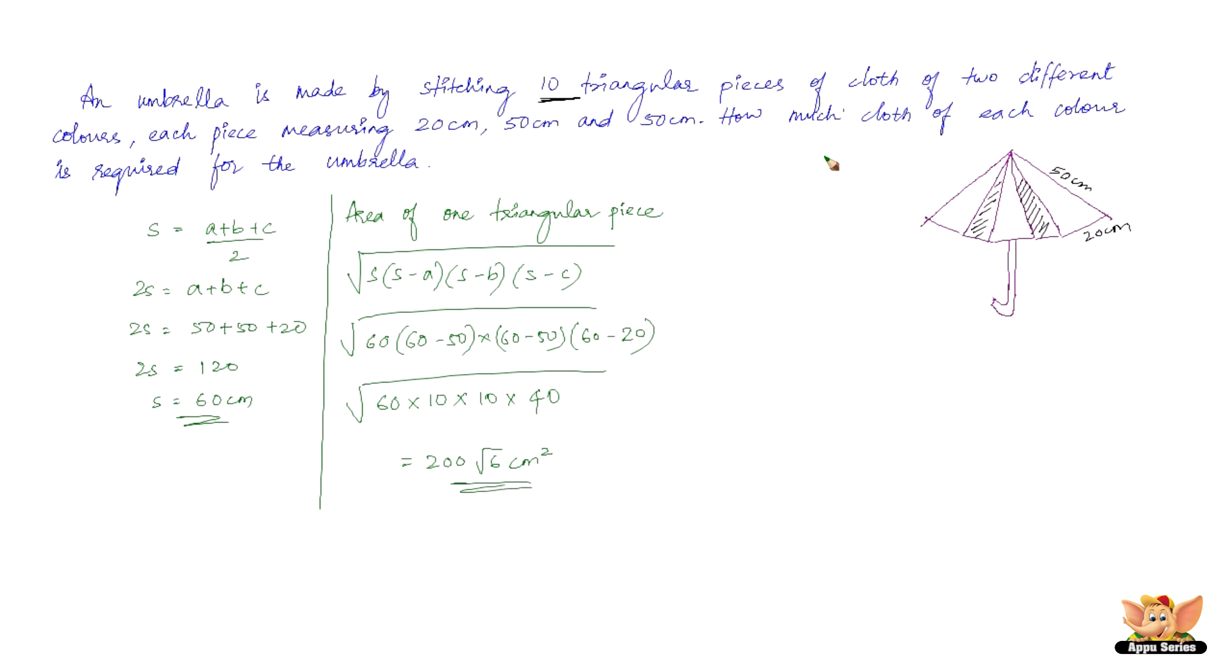So now the question here is how much cloth of each color is required for the umbrella? It is made by stitching 10 triangular pieces of cloth of two different colors. So each color is going to be of five pieces or five pieces of the same color. So 10 pieces of two different colors. So one triangular piece has this area. So all we need to do is find one color's area that is five pieces. So 5 into 200 root 6 is 1000 root 6 cm square. Therefore the area of each color is 1000 root 6 cm square. This completes this problem.